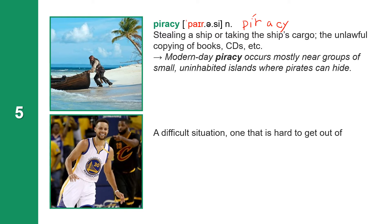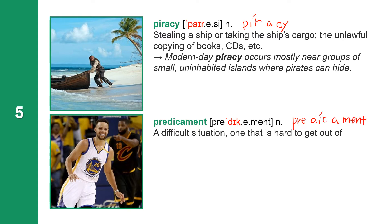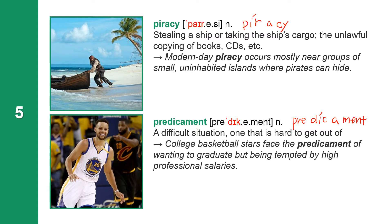The next word means a difficult situation, one that is hard to get out of. The word is Predicament. Predicament is a noun. It has four syllables: P-R-E-D-I-C-A-M-E-N-T, with stress on the second syllable. College basketball stars face the predicament of wanting to graduate but being tempted by high professional salaries.